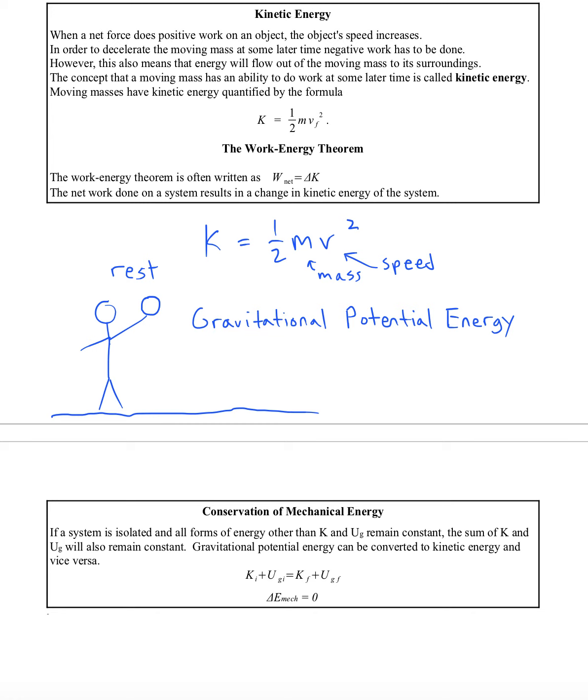Sometimes that is referred to as PE for potential energy, or sometimes the letter U with a little subscript G. These both stand for gravitational potential energy. It means that Earth can do work on this object by exerting a force on it as it falls.